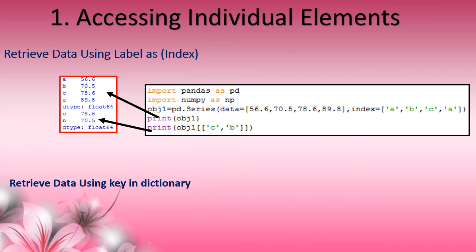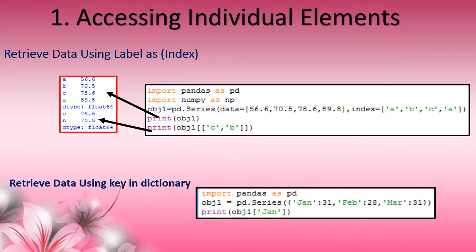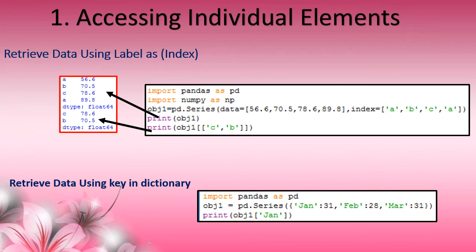Next, how to access data through keys in a dictionary-based Series. A Series object is created from a dictionary with three key-value pairs: January, February, and March. To access the January key data, we give object1['January']. So 31 is displayed.